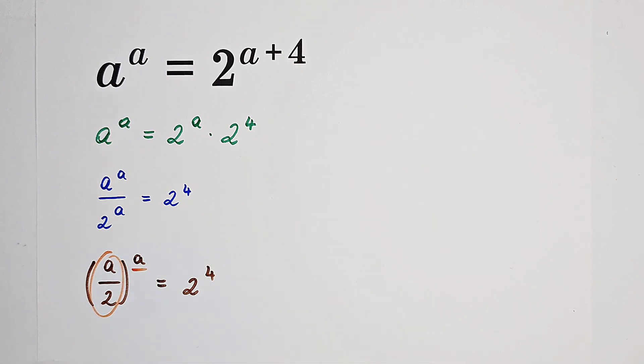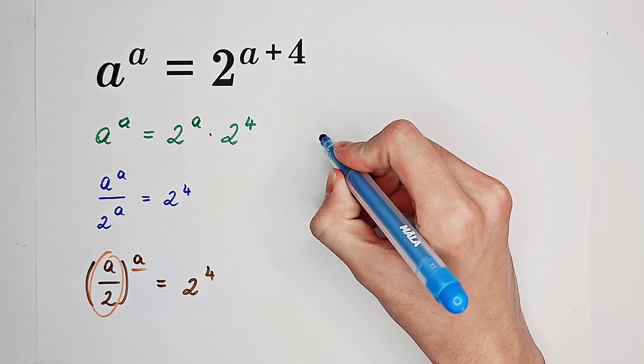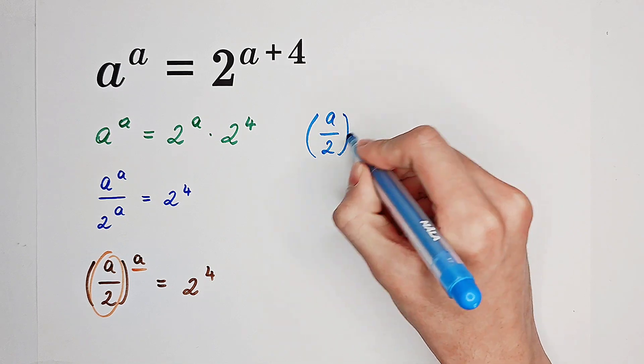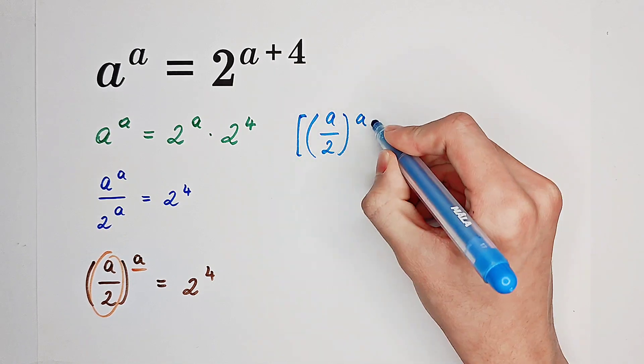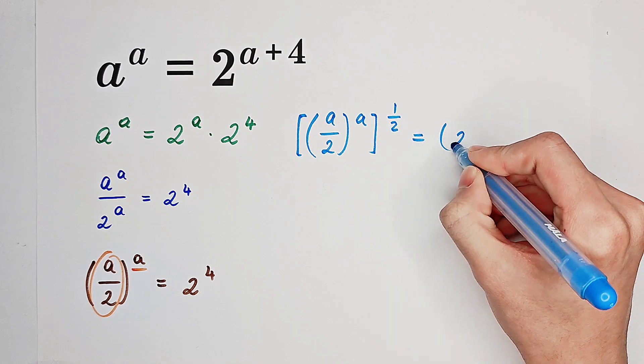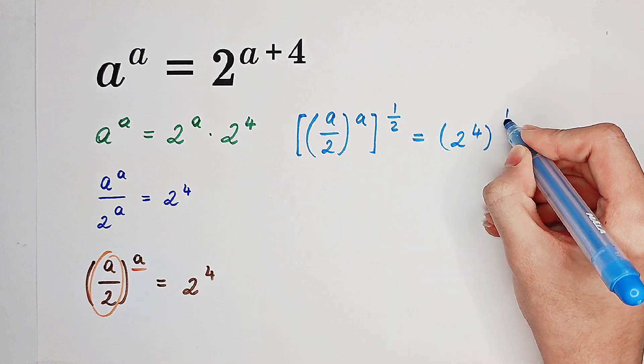So now, what I'm going to do is to raise both sides to the power of 1 half. Now, we have A over 2 to the power of A all to the power of 1 over 2 equals 2 to the power of 4 all to the power of 1 over 2.